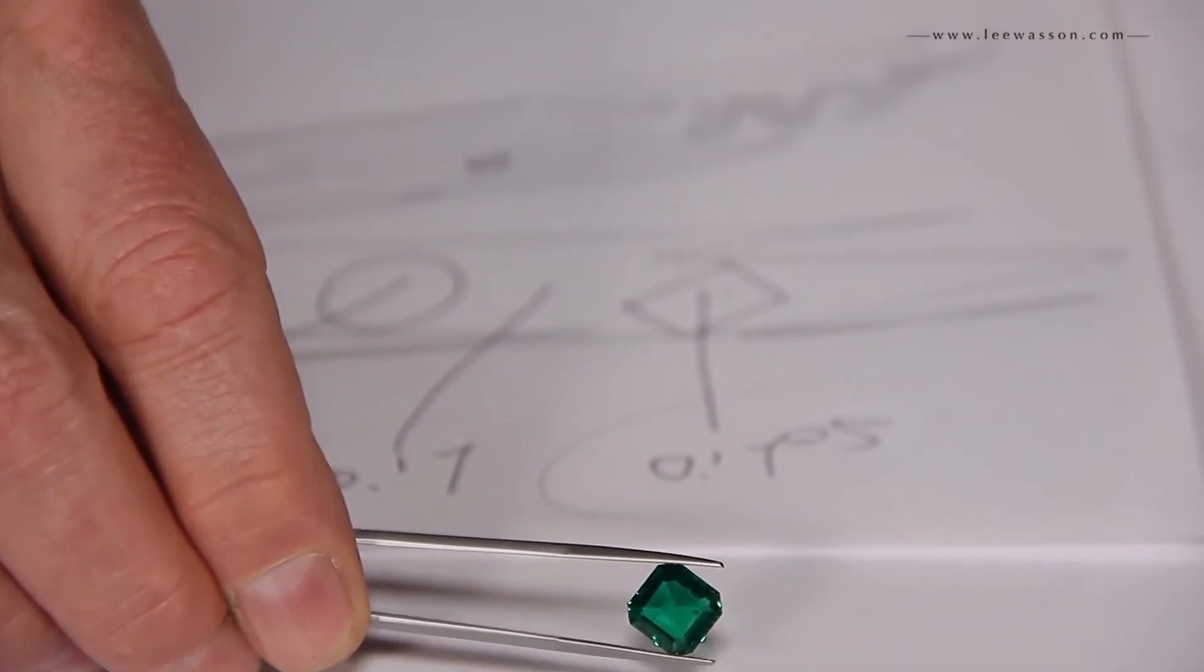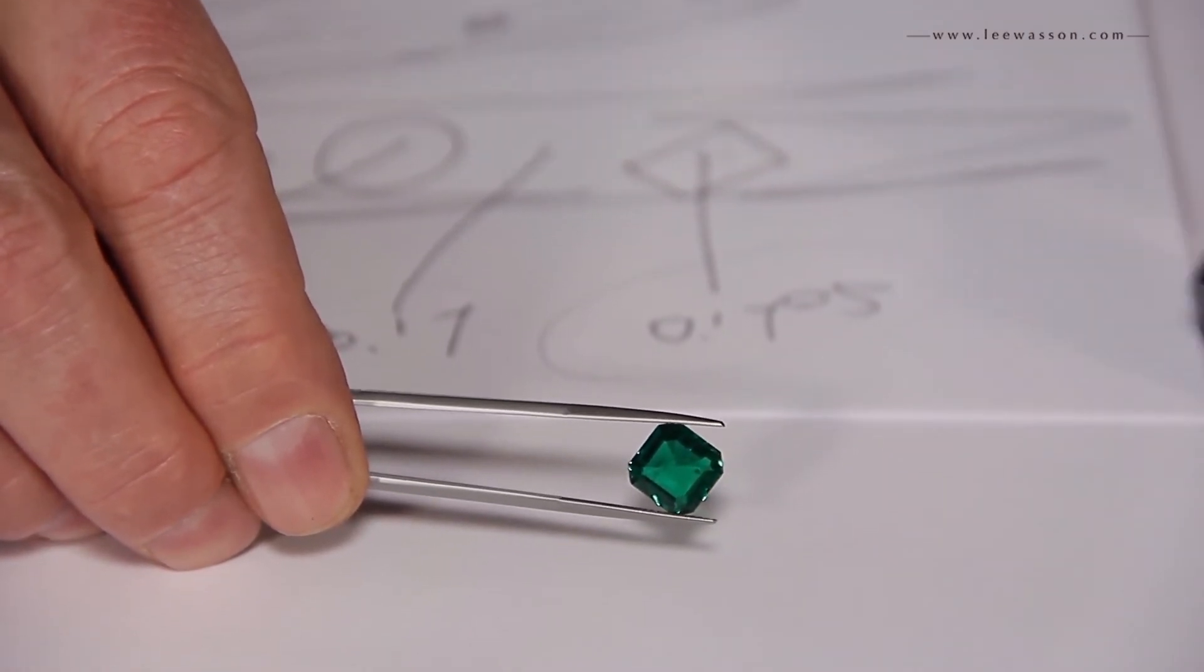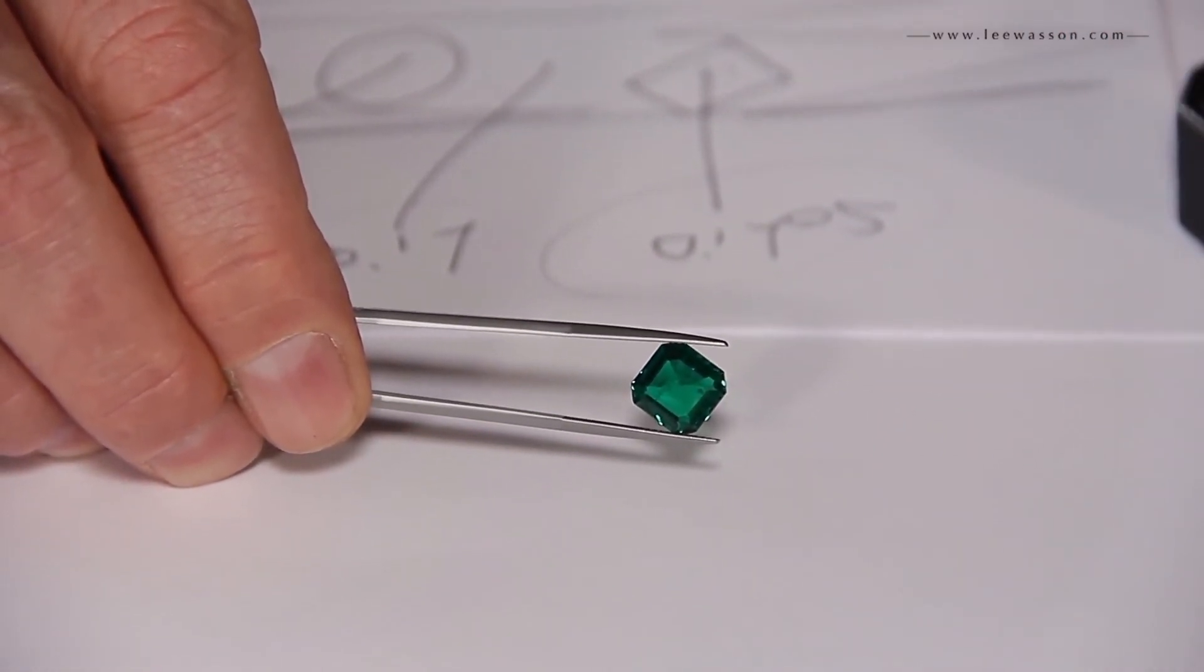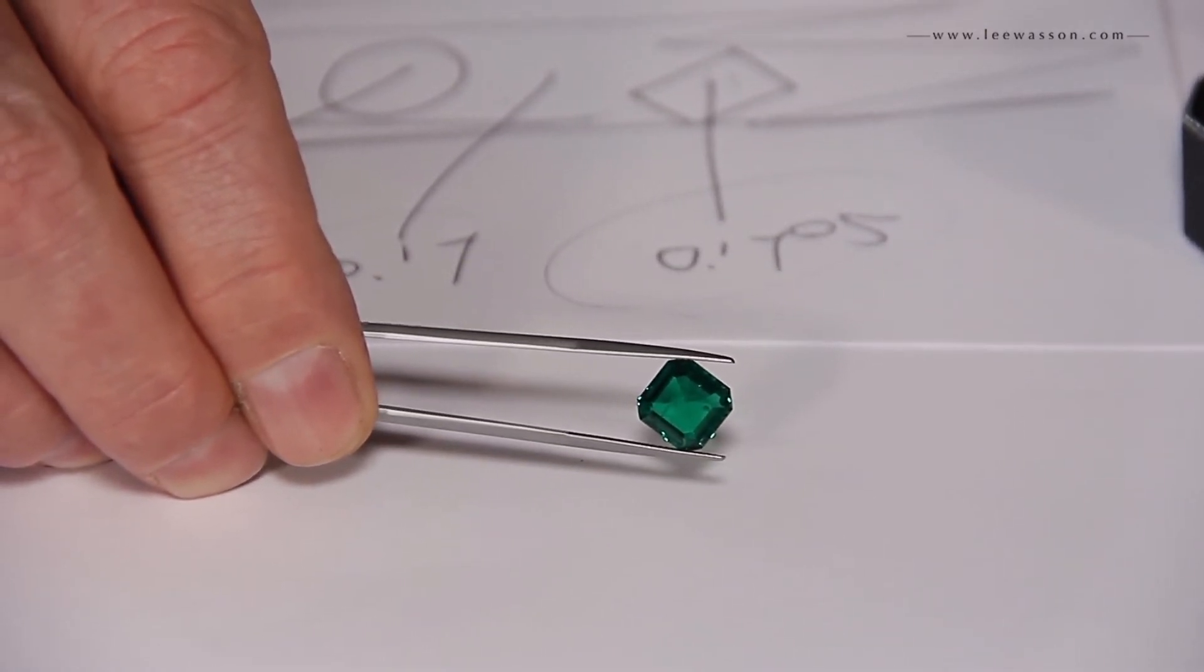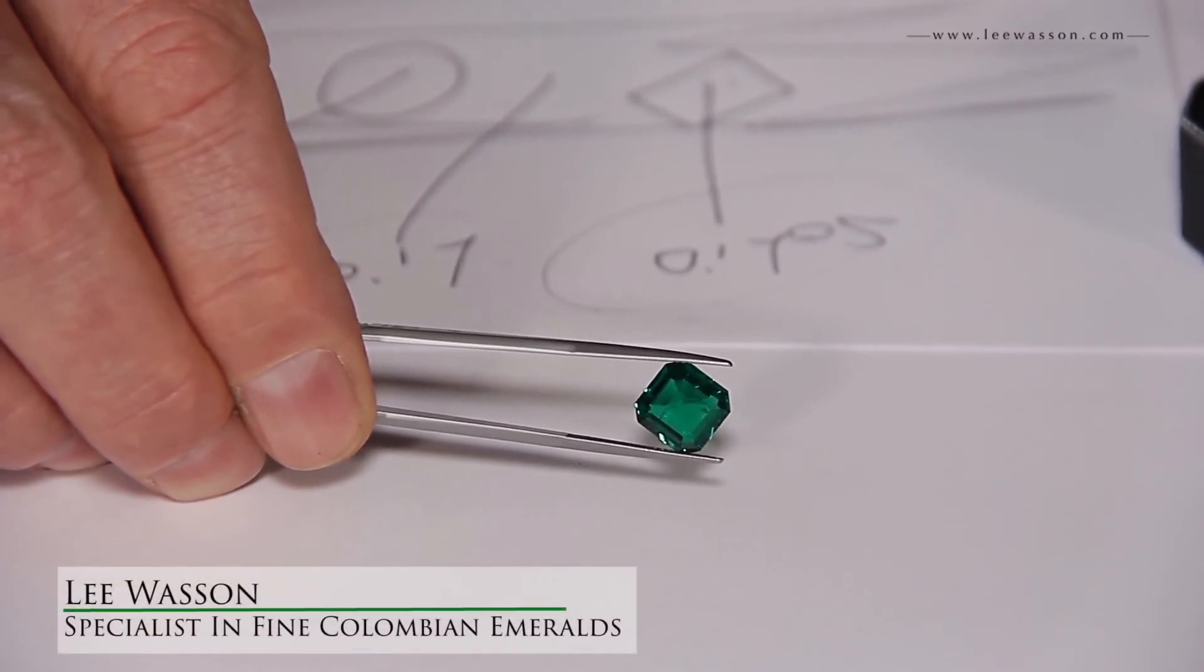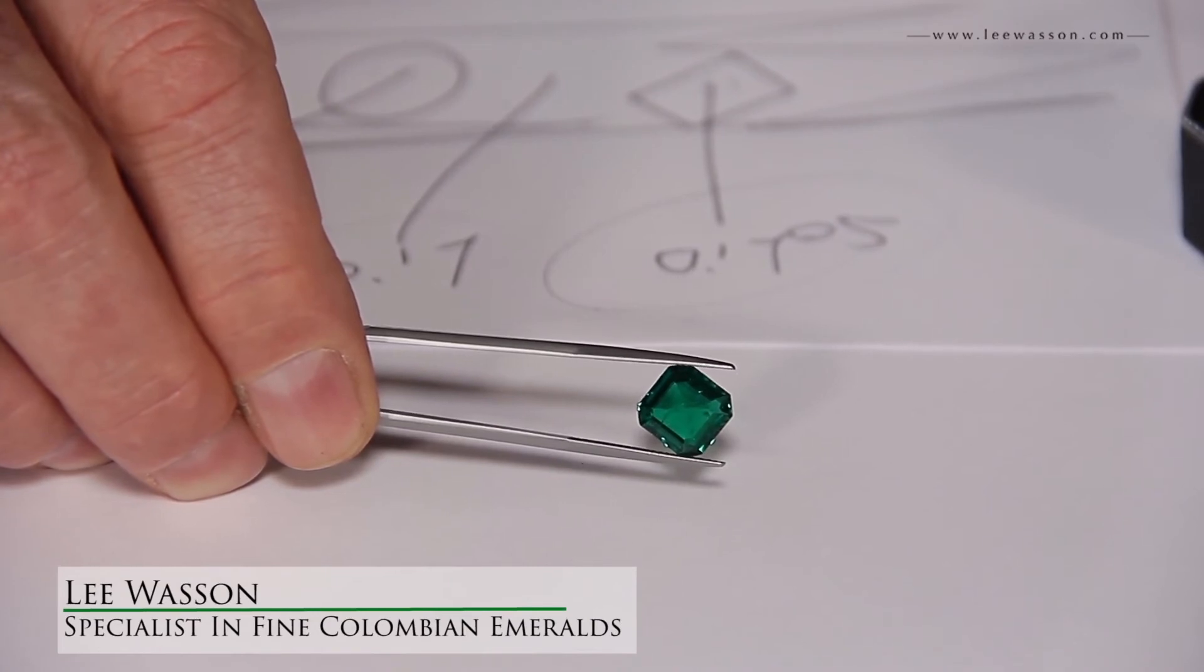Usually, looking for inclusions with a loupe will tell you that it's not natural. It takes a little bit of experience. I've been doing this for 44 years, so it's easy to see a synthetic for me, even from a distance.